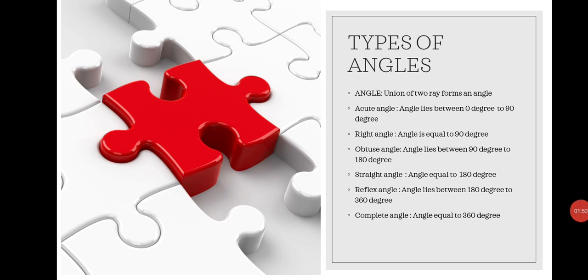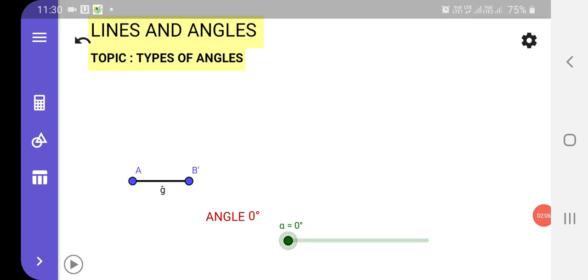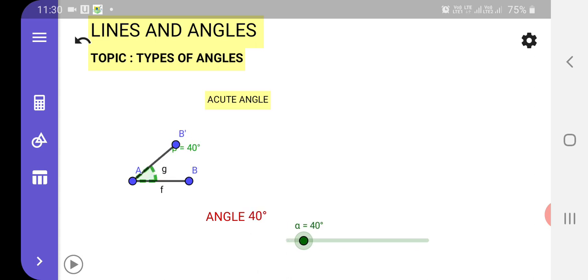Students, now we are going to discuss about the types of angles with the help of a diagram. We have seen two rays which coincide with one another. When we rotate the rays in the anti-clockwise direction, you observe a ray from A to B and another ray from A to B dash. When the rays are moving, it is forming an angle at the common point, that is A.